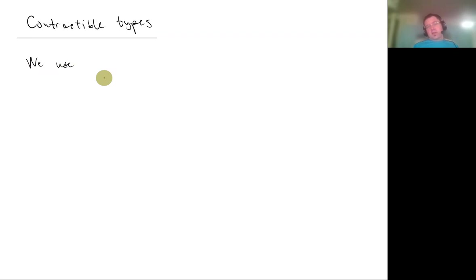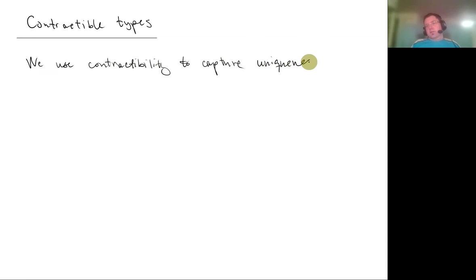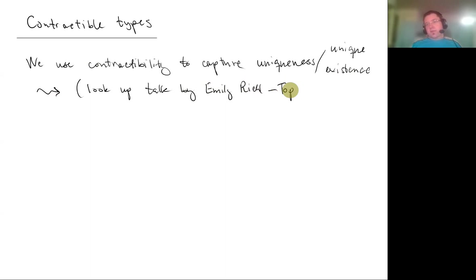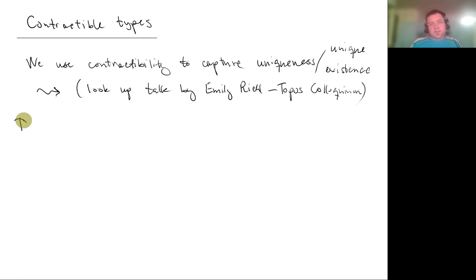We use contractibility to capture unique existence in a homotopically coherent way. There's a very nice talk by Emily Riehl — one instance was at the Topos Colloquium — where she explains very nicely why contractibility is the right notion in higher category theory and homotopy theory to express unique existence.